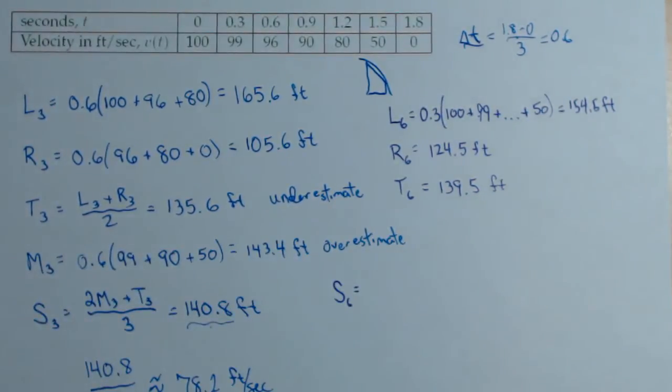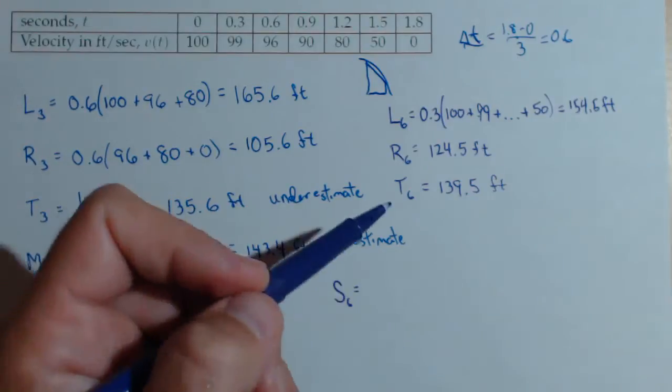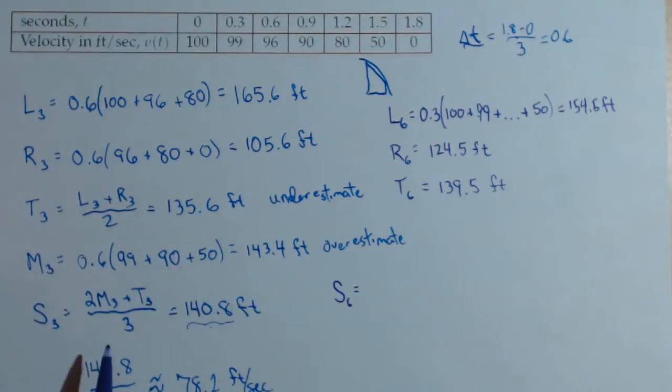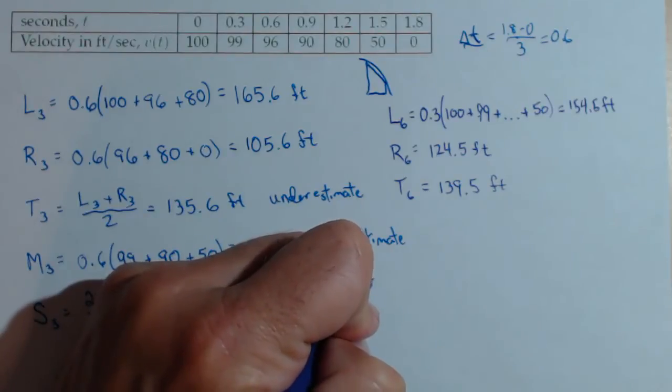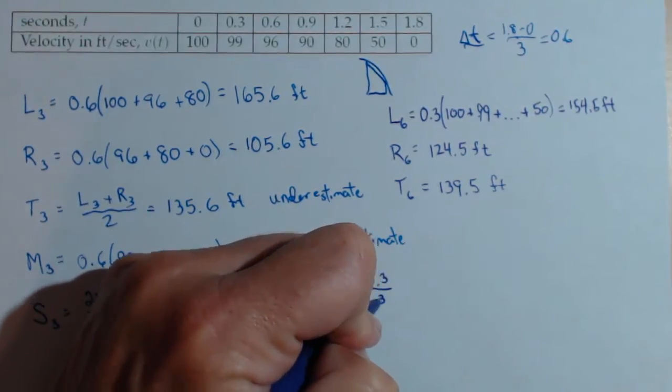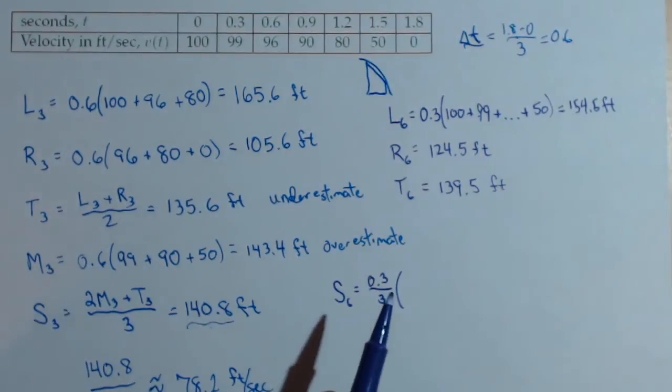We're just going to have to do it the long way. If we know trapezoid and midpoint, we can do Simpson's rule by doing a linear combination. If we don't, what we have to do is we have to take our delta x, 0.3, and divide it by three.